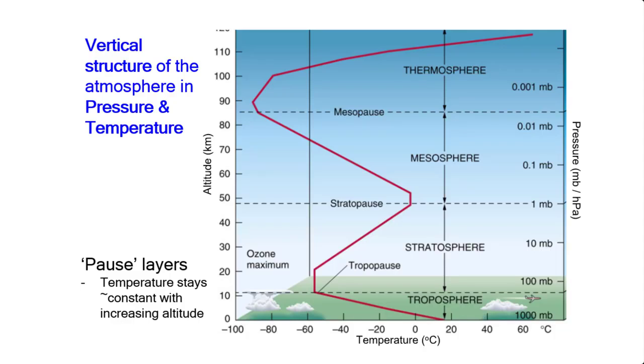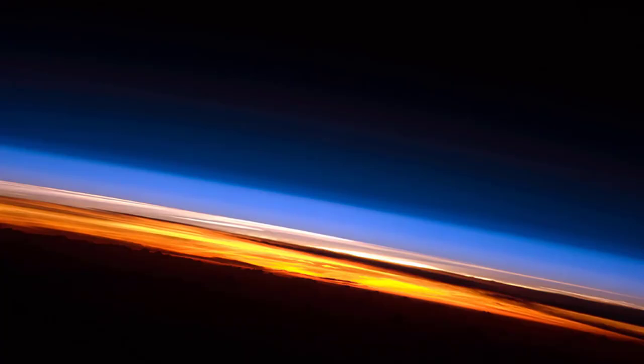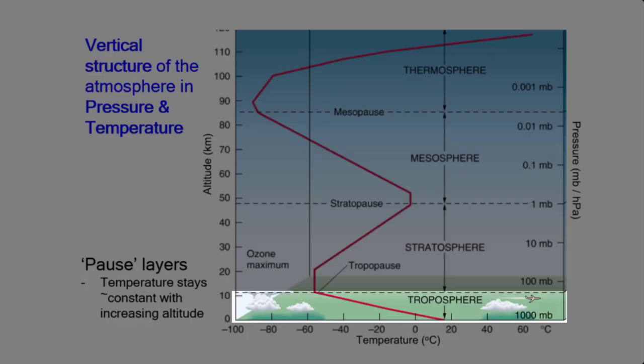So the temperature of the atmosphere has an interesting behavior and it varies depending which layer we're talking about. In the troposphere, where we live, temperature generally decreases with altitude.